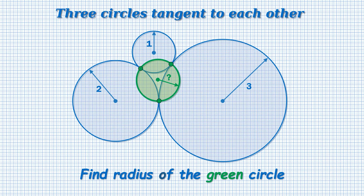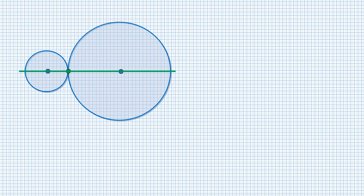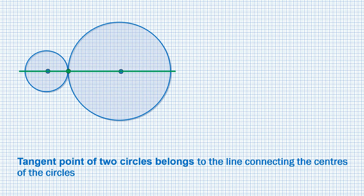At start, let's figure out what it means that two circles are tangent to each other. Two circles are tangent if they have one and only one common point, called the tangent point. A tangent point of two circles must belong to the line connecting the centers of the circles, as any point outside the center line would have a symmetric point — giving another common point of the circles. Now we can make a proper drawing for the problem.